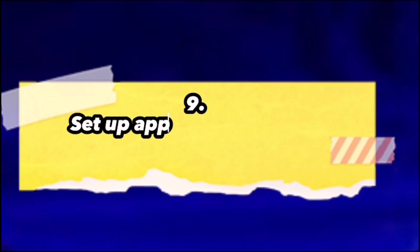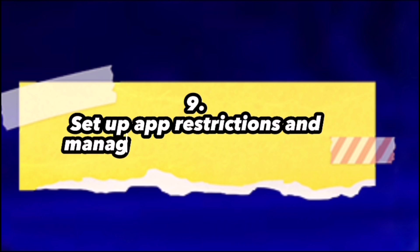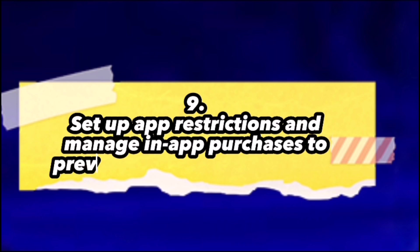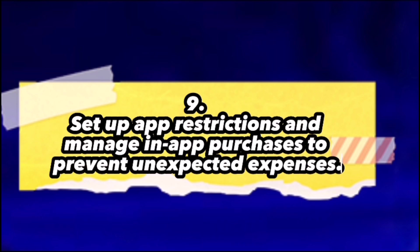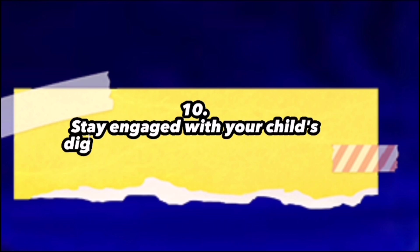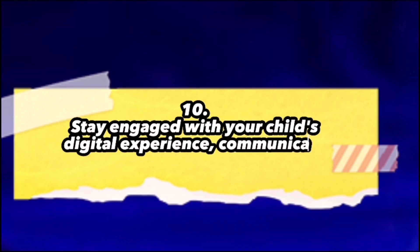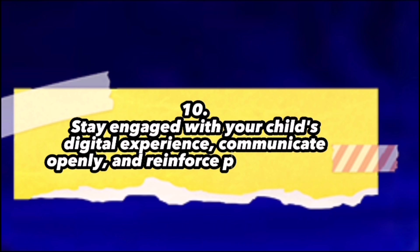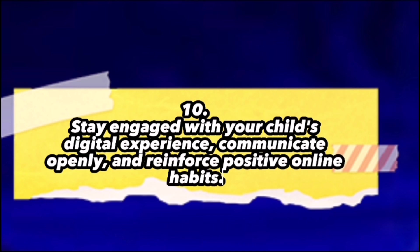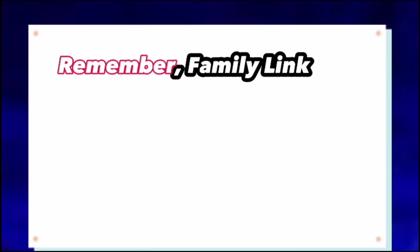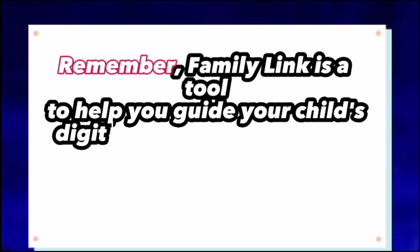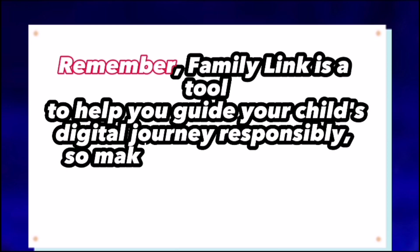Nine: Set up app restrictions and manage in-app purchases to prevent unexpected expenses. Ten: Stay engaged with your child's digital experience, communicate openly, and reinforce positive online habits. Remember, Family Link is a tool to help you guide your child's digital journey responsibly, so make sure to have open conversations and establish boundaries together.